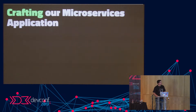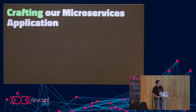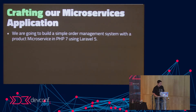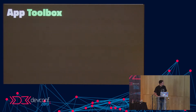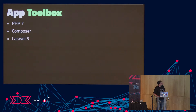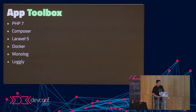Now let's look briefly at crafting our microservices application — we're going to look at the products microservice and make sure it can degrade gracefully. We'll build a simple products microservice using PHP 7 and Laravel 5. Our toolbox is PHP 7, Composer for package management, Laravel 5, Docker for containers, Monolog for logging, and Logly as our cloud distributed logging provider.